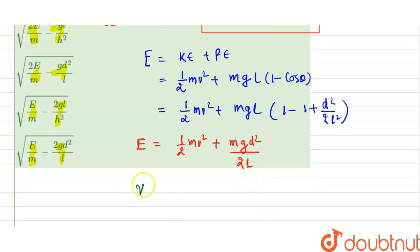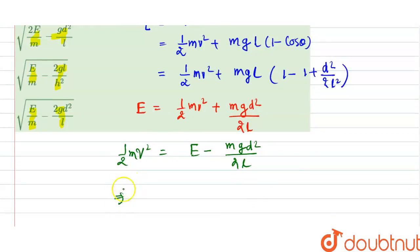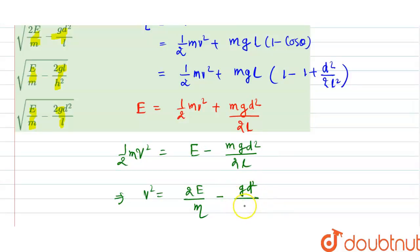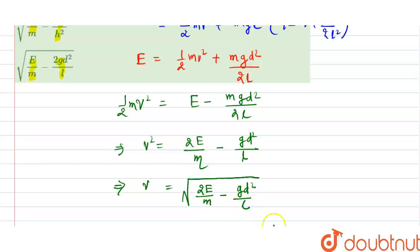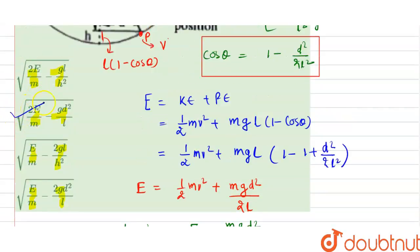From the energy equation, ½mv² = E - mg·d²/(2l). Therefore, v² = 2E/m - g·d²/l. So the velocity at point P is v = root over of (2E/m - g·d²/l). Checking the options, the second option is the correct answer.